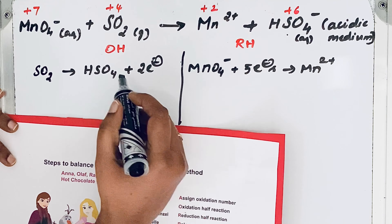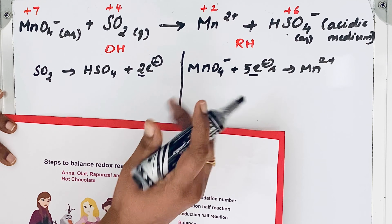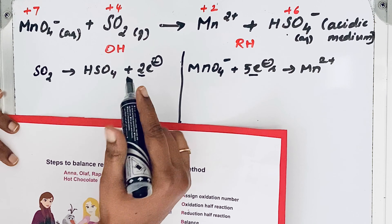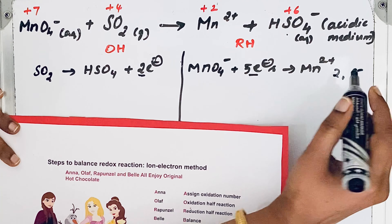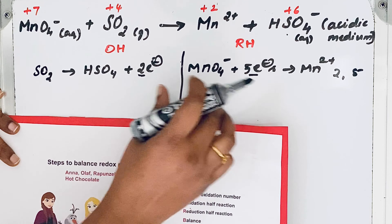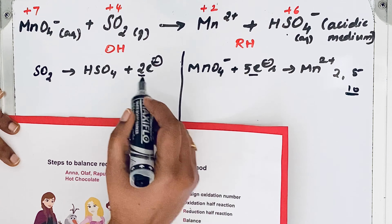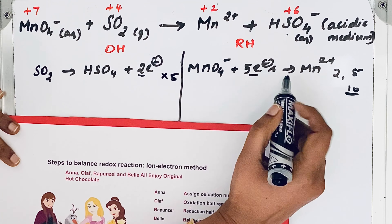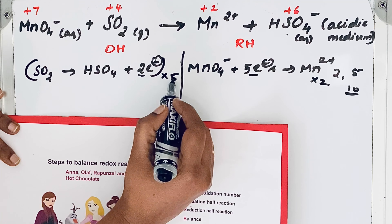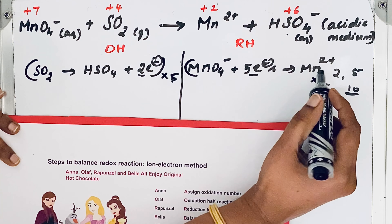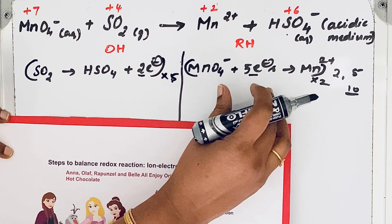In the oxidation half reaction there are two electrons lost, but in the reduction half reaction five electrons are gained. The basic principle of a redox reaction is that the number of electrons gained must equal the number of electrons lost. So we multiply the oxidation half reaction by 5 and the reduction half reaction by 2 to get 10 electrons on each side.